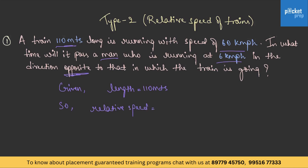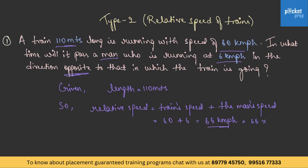As they are moving opposite to each other, their relative speeds are added. Relative speed = 60 + 6 = 66 km per hour. Converting to meters per second: 66 × 5/18 = 55/3 meters per second. The distance is 110 meters (the length of the train).